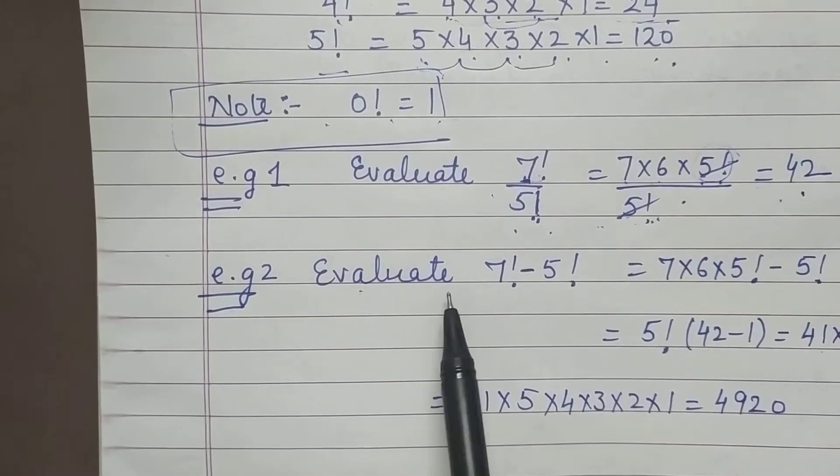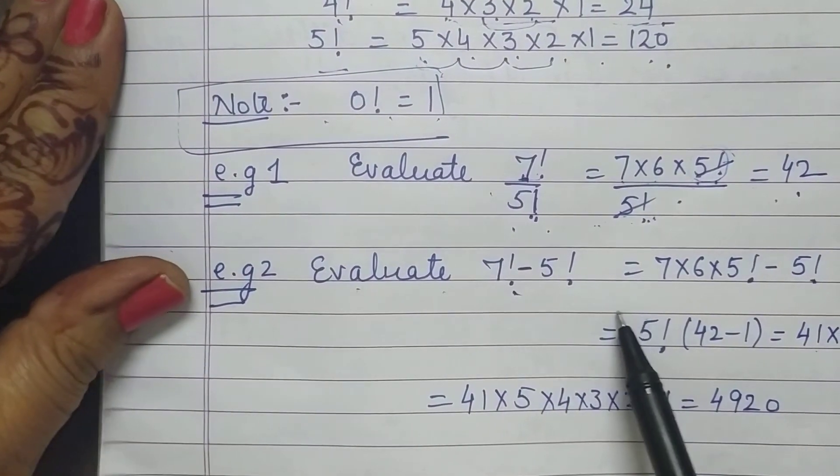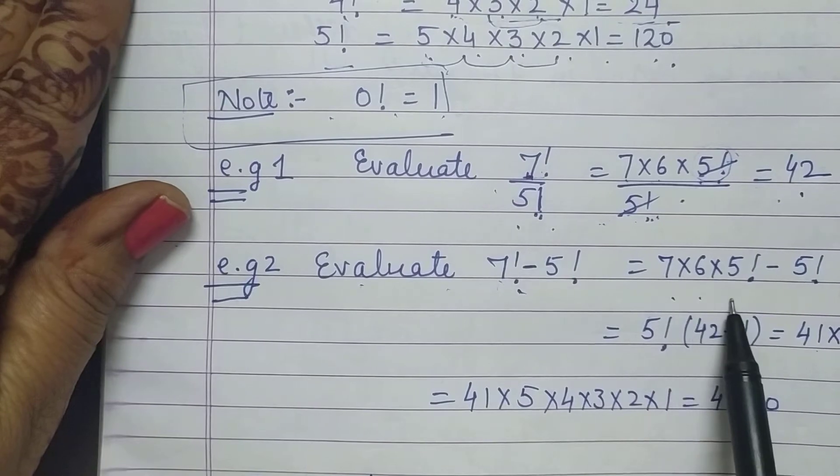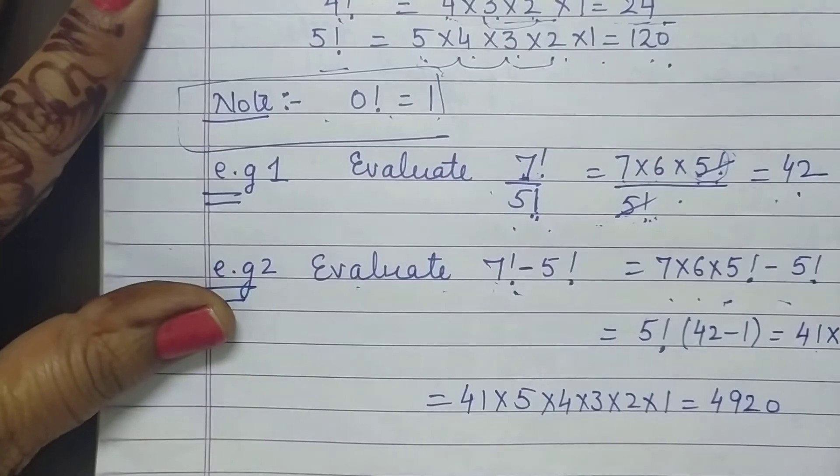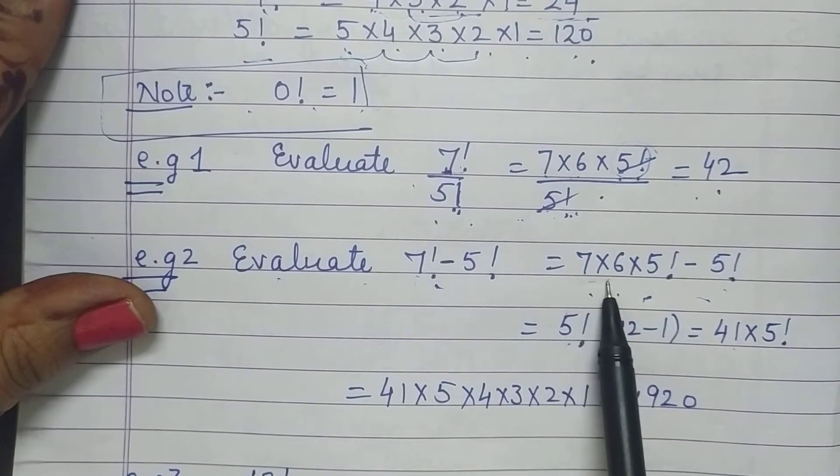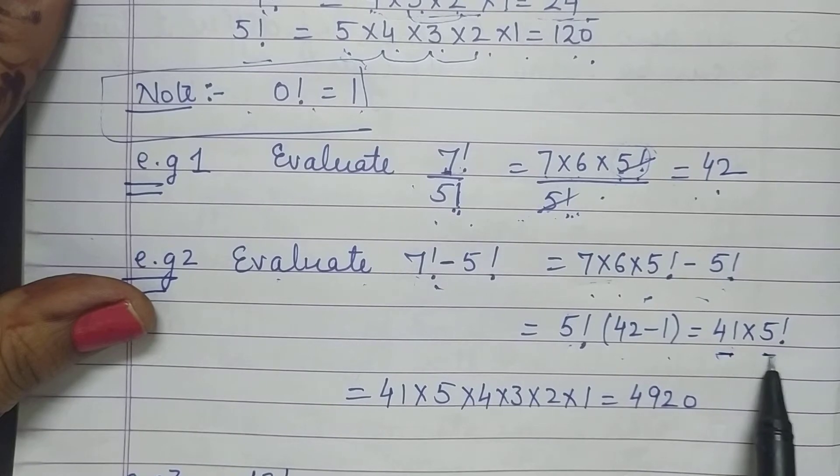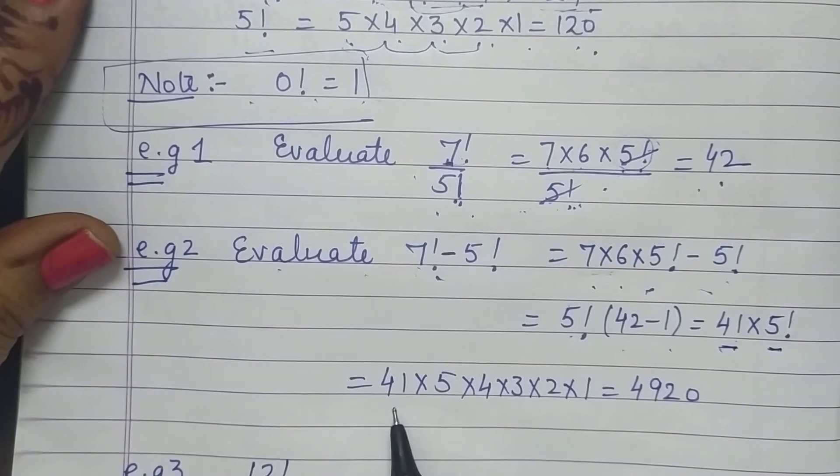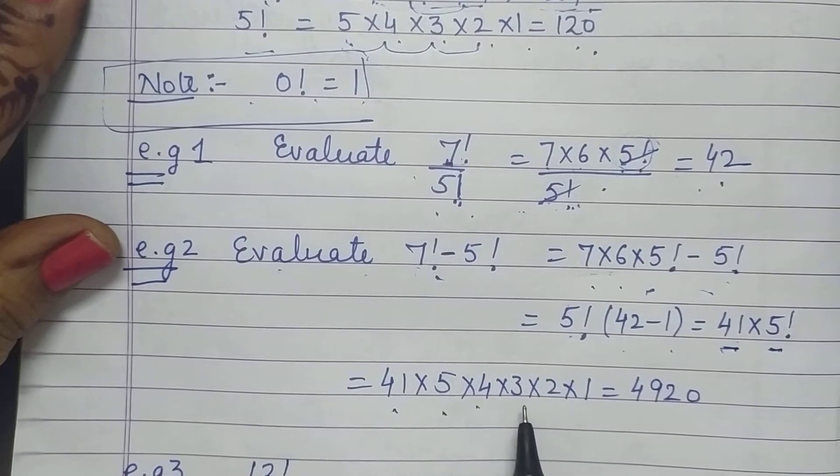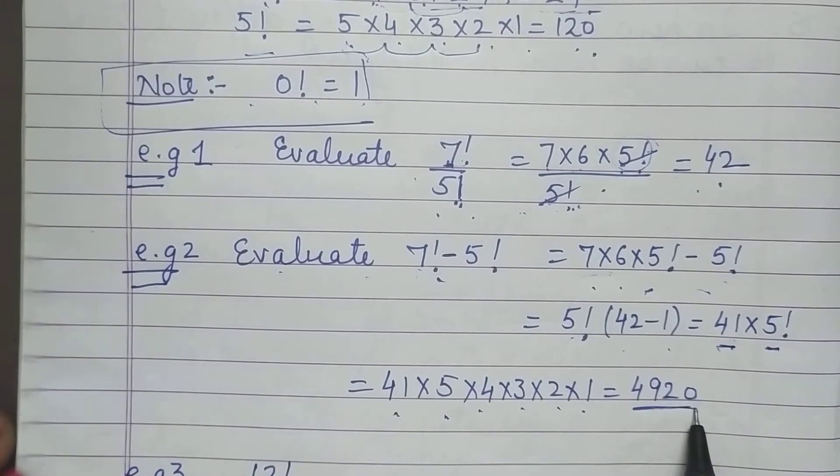Next example. Evaluate 7 factorial minus 5 factorial. So again 7 is larger. So I can write it as 7 into 6 into 5 factorial minus 5 factorial. Then take 5 factorial common. What is left inside? 42 minus 1. So this becomes 41 into 5 factorial. Now let me open 5 factorial. 41 into 5 into 4 into 3 into 2 into 1. So you got the answer 4920.